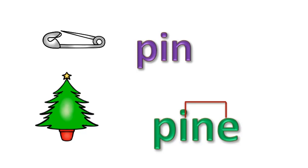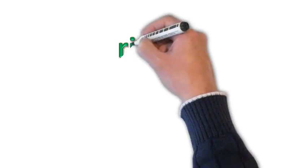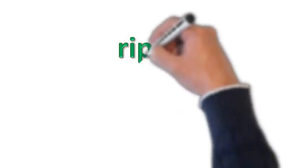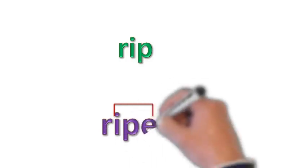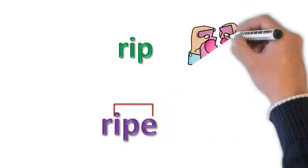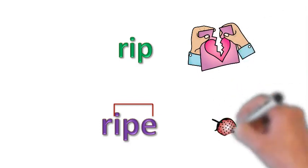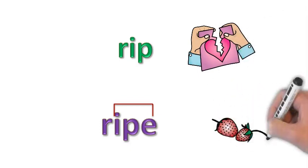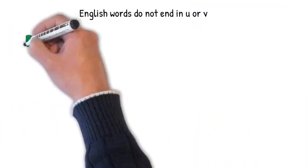So the E is silent in the word pine. Let's try another one. We have the word rip. R-I-P becomes R-I-P-E, which is ripe. So the silent E has the job of making vowels long.